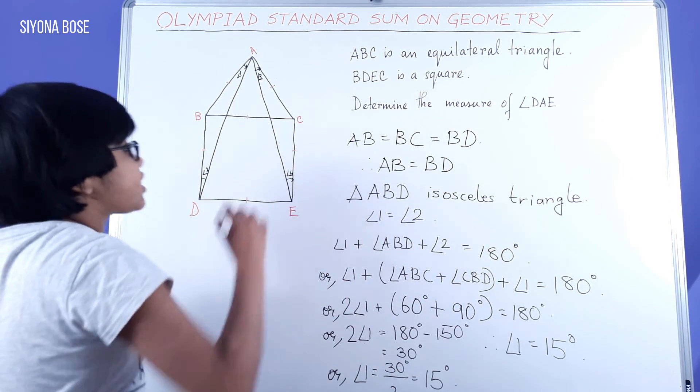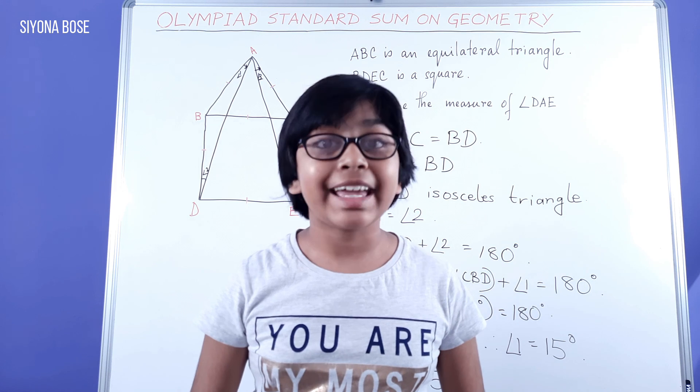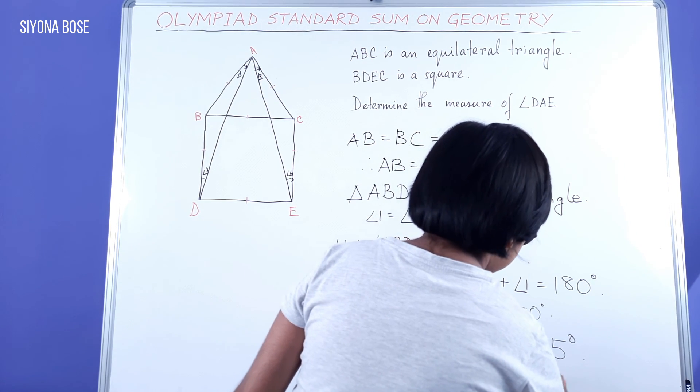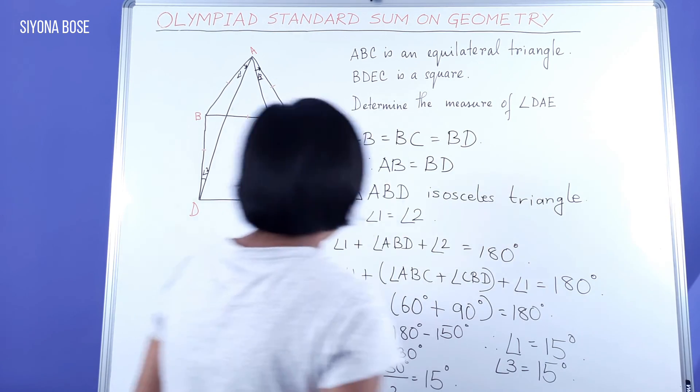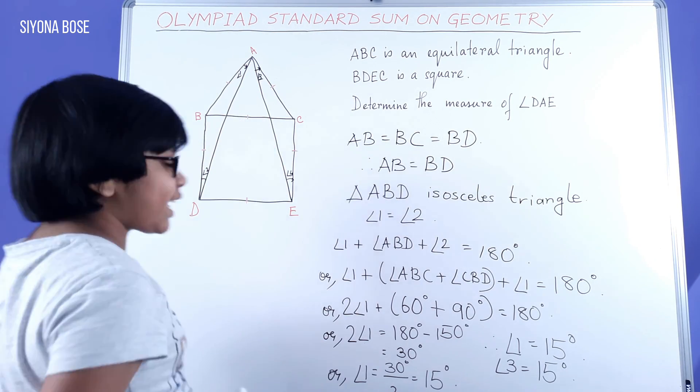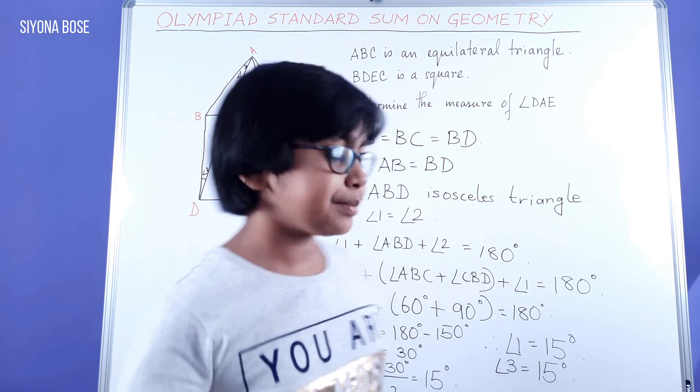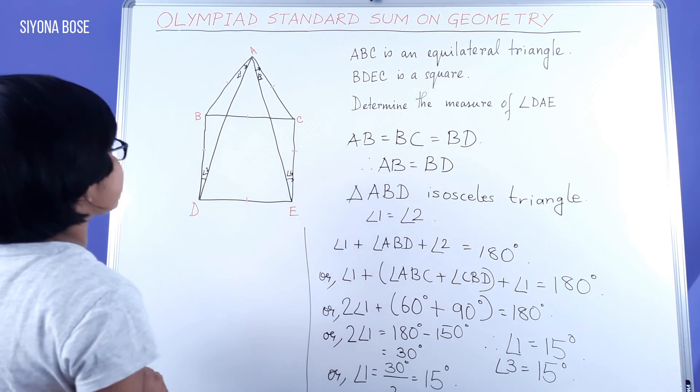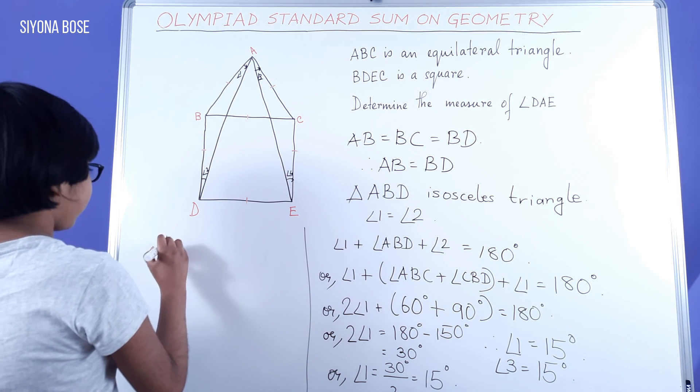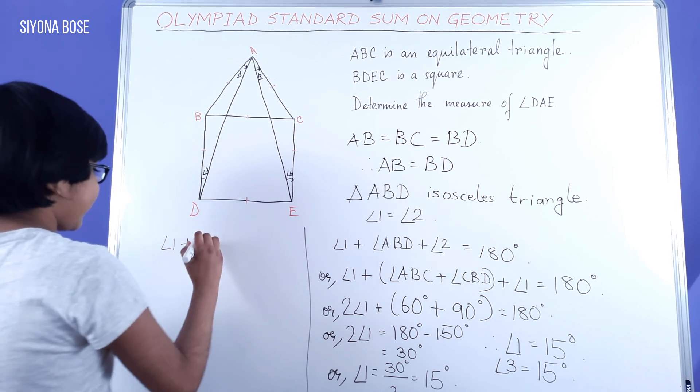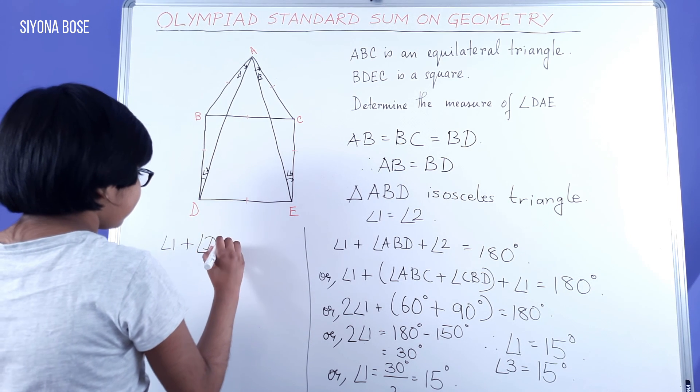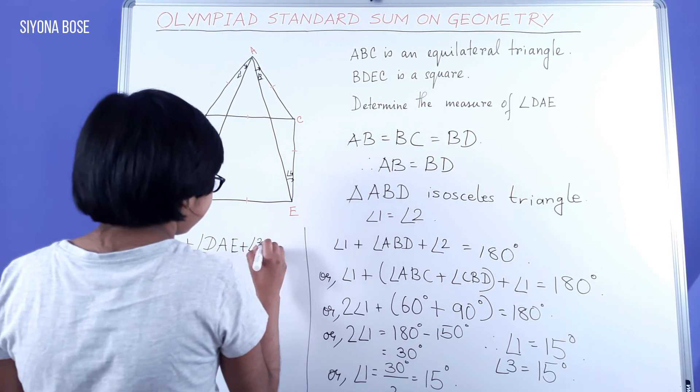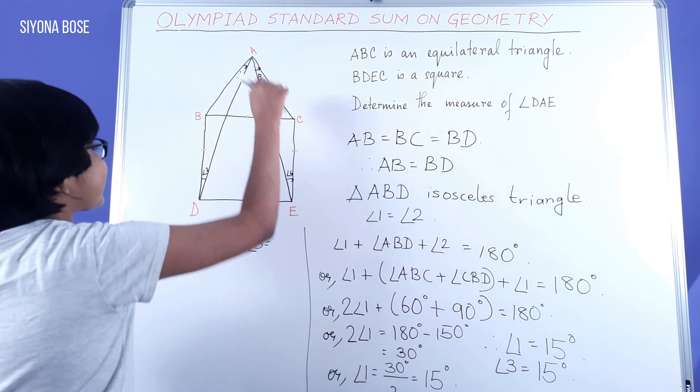Similarly, we can do the same for angle 3 and we can obtain angle 3 equal to 15 degrees. Now, finally, we can move on to getting angle DAE. So, angle DAE is basically angle 1 plus angle DAE plus angle 3 equal to angle BAC.